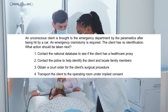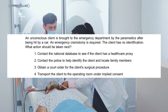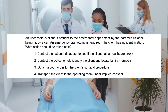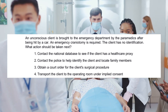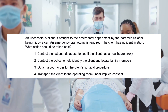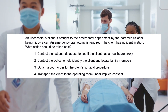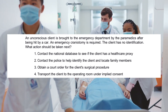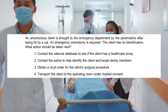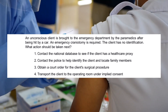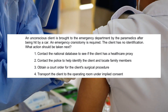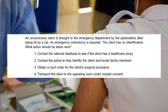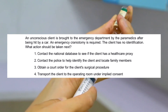An unconscious client is brought to the emergency department by paramedics after being hit by a car. An emergency craniotomy is required. The client has no identification. What action should be taken next? 1. Contact the national database to see if the client has a healthcare proxy. 2. Contact the police to help identify the client and locate family members. 3. Obtain a court order for the client's surgical procedure. 4. Transport the client to the operating room under implied consent.